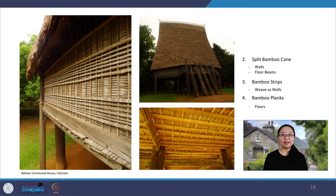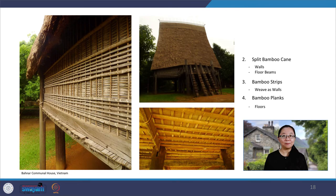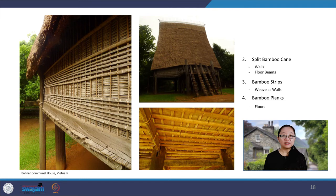Another example of bamboo used in vernacular architecture is the Bahnar communal house of the Central Highlands in Vietnam. These are towering wooden houses with bamboo floors and walls, built on stilts that can reach up to 100 feet in height. The roof is made of straw, and the rafters are made of circle-shaped pieces of wood. The floor is made of bamboo planks supported by split bamboo as floor beams. The walls are a combination of woven bamboo planks, bamboo strips, and small bamboo canes tied with rattan, arranged beautifully to allow air to ventilate the interior.